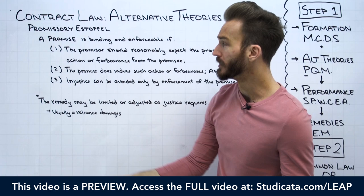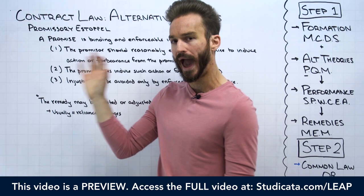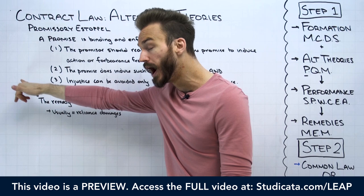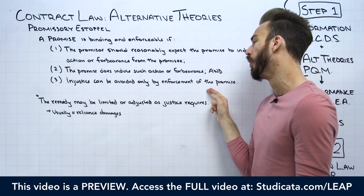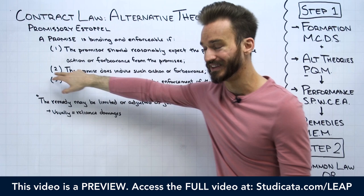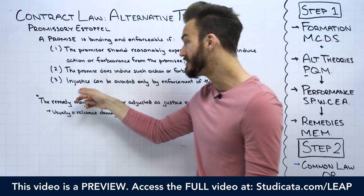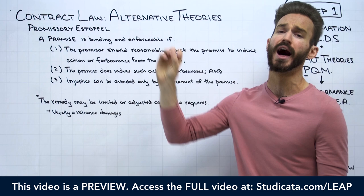Under Section 90 of the Restatement Second of Contracts, a promise — even if it lacks consideration — is binding and enforceable if: first, the promisor should reasonably expect the promise to induce action or forbearance from the promisee; second, the promise does induce such action or forbearance; and third, injustice can be avoided only by enforcement of the promise. The first element is about foreseeability, the second is about detrimental reliance, and the third is about equity or justice.